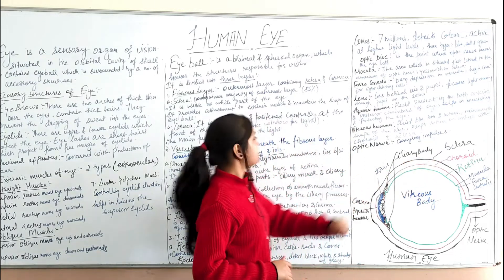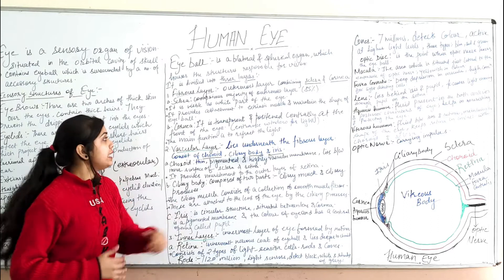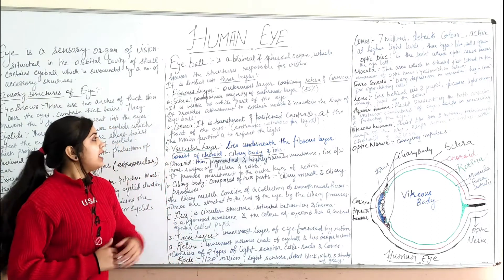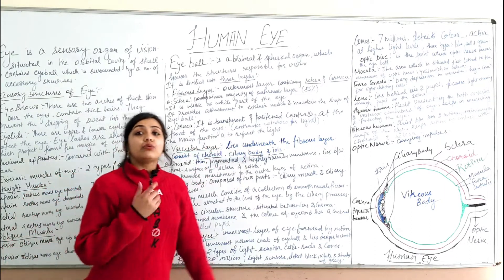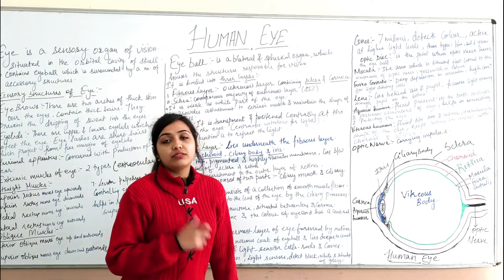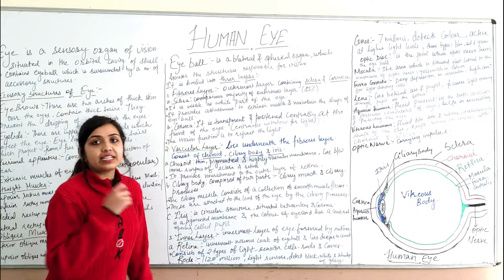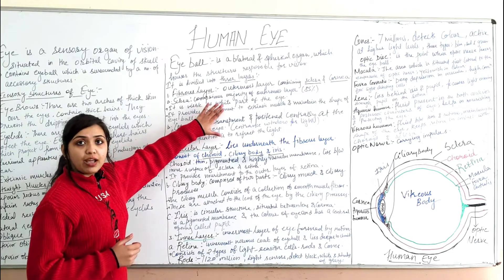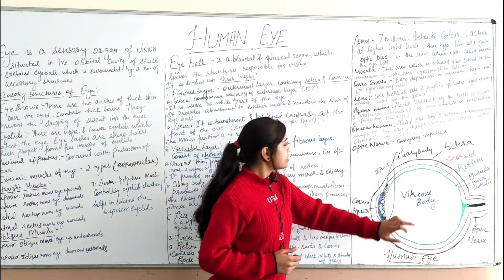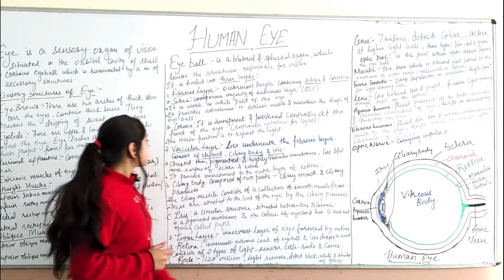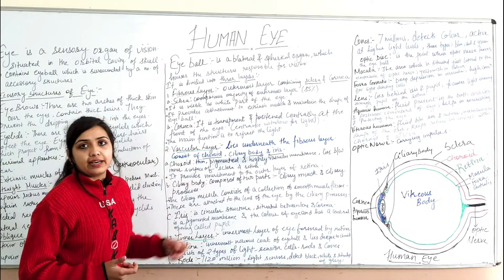The cornea is the transparent structure located centrally at the front of the eye. It serves as the entrance window for light entering the eye, and its main function is to refract that light. Together, the sclera and cornea form the fibrous outer layer. Here you can see the sclera and the cornea in the diagram.